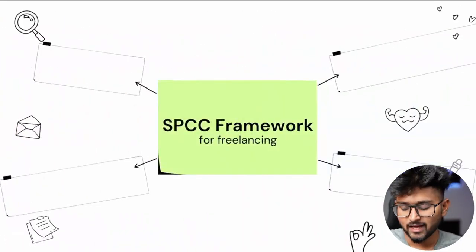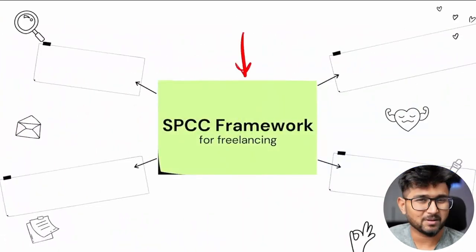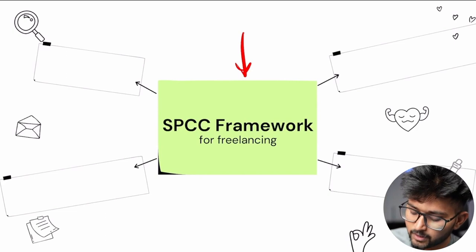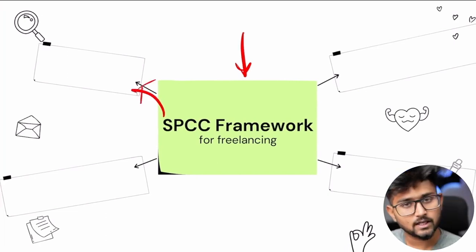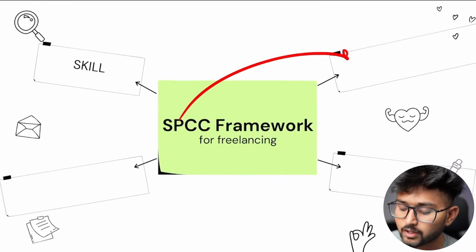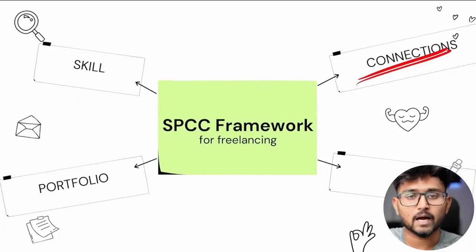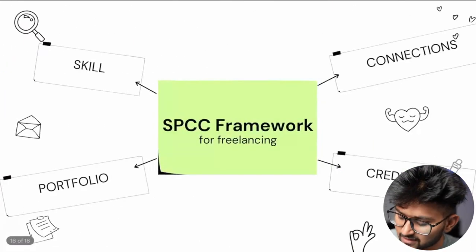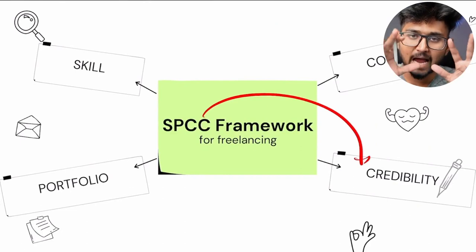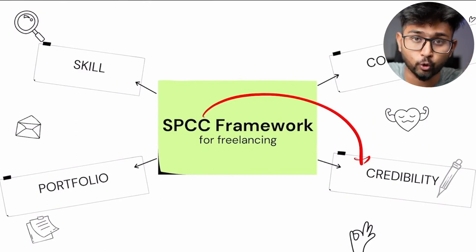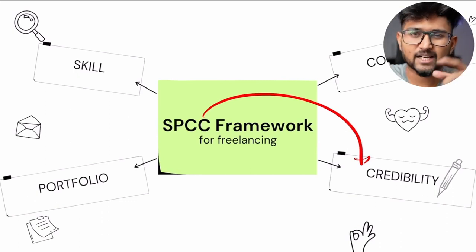Now coming to the SPCC framework for freelancing. What is the SPCC framework? Very simple: S stands for the Skills that you have, P stands for the Portfolio that you are building, C stands for the Connections that you have, and the last C stands for Credibility. So if you have these four things — skills, portfolio, connections, and credibility — you are set. We already had a special class on portfolio where I gave you an introduction to how to make it.